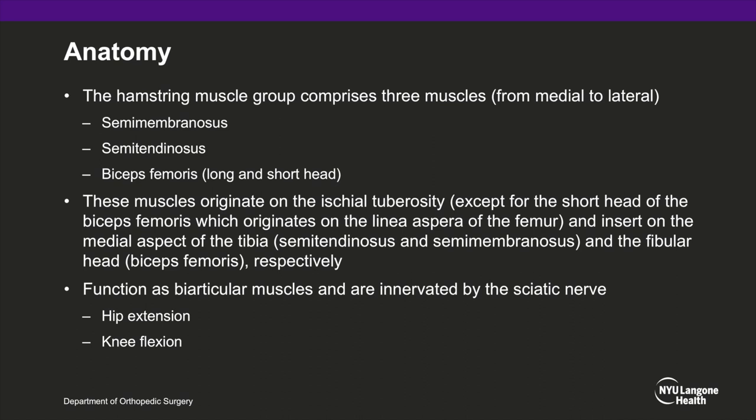The semitendinosus and semimembranosus insert on the medial aspect of the tibia. The long head of the biceps inserts on the fibular head. The short head of the biceps femoris originates on the linea aspera of the femur and inserts on the fibular head. The hamstrings function as biarticular muscles, meaning they function across two joints — the hip and the knee — and are innervated by the sciatic nerve, functioning in hip extension and knee flexion.